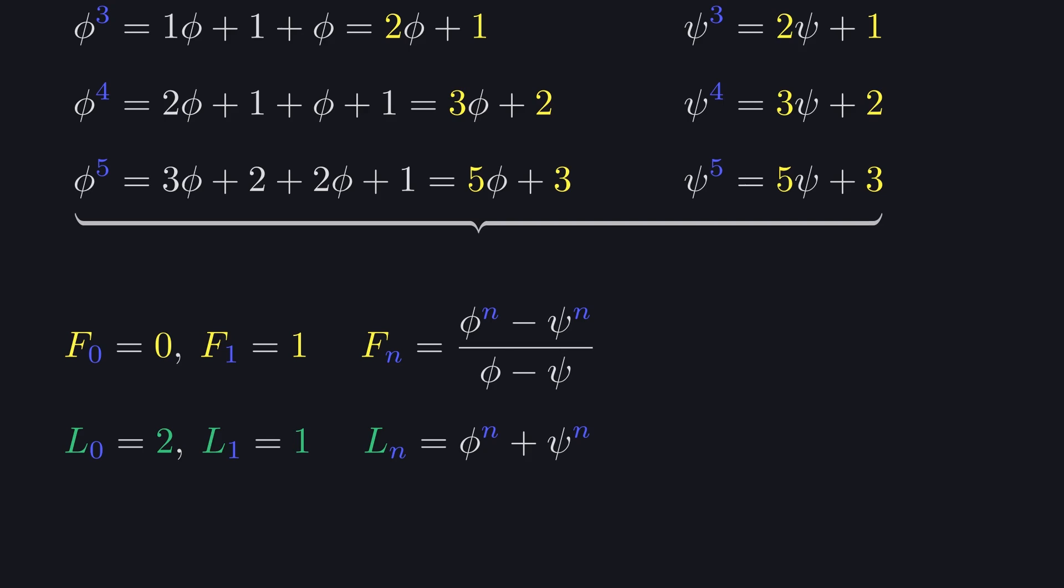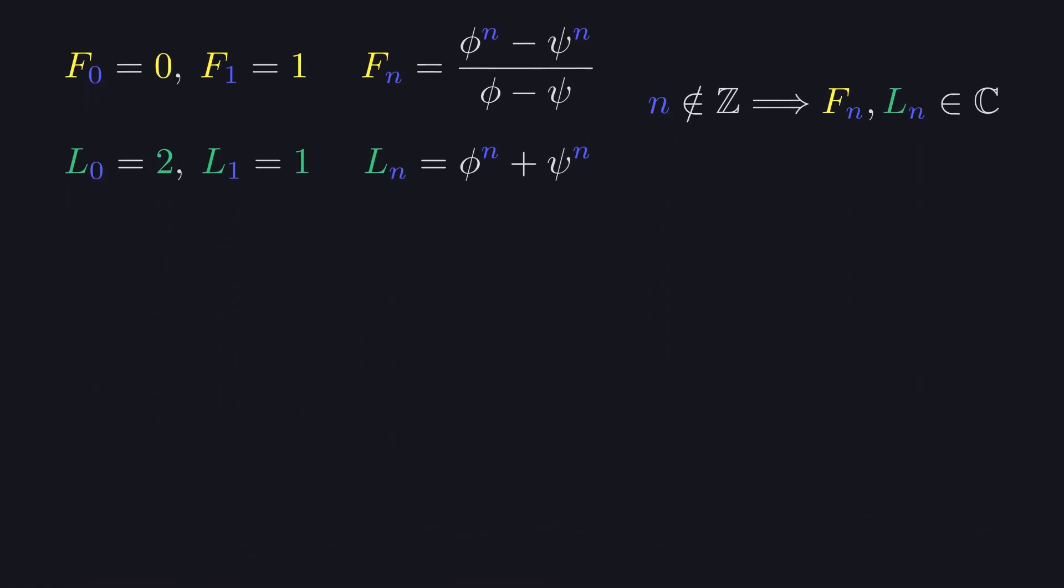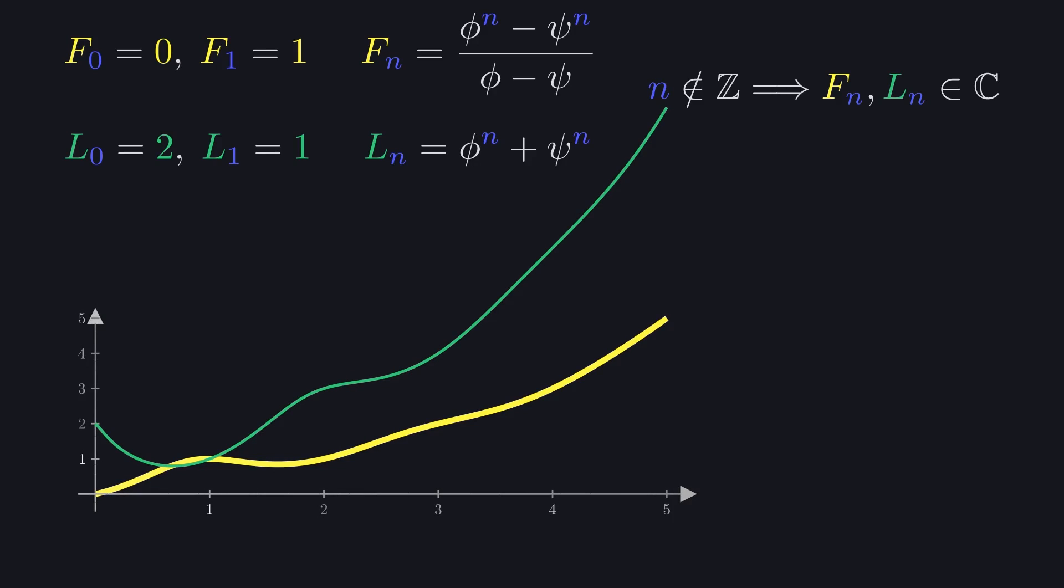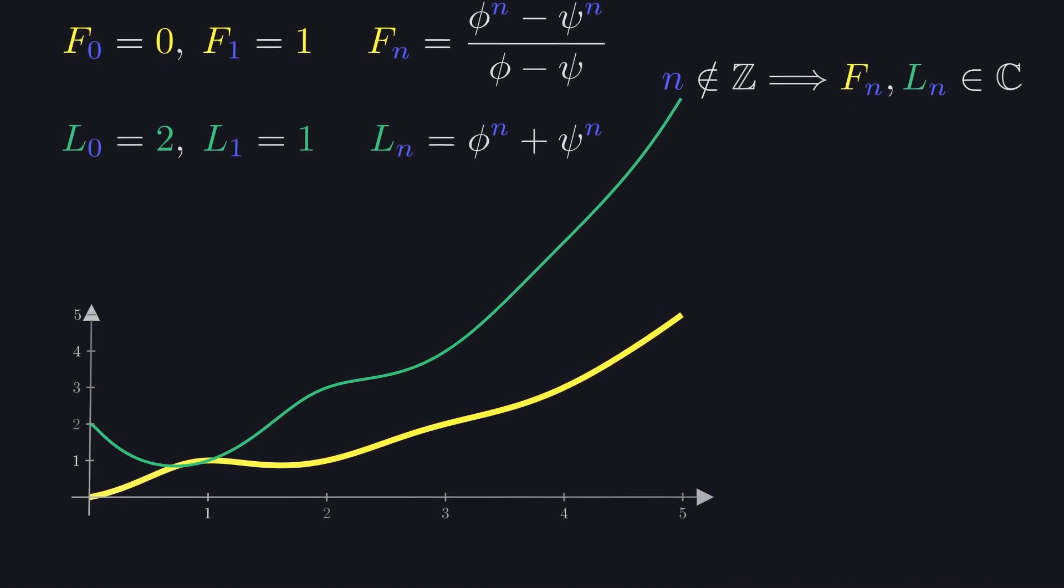Now, if we get a bit mischievous and plug a non-integer in for n, the closed-form formulas give us complex answers, because one of the numbers we're raising to that fractional power, psi, is negative. And this is our starting point today. The continuous complex curves we get are really just a tiny taste of a rich world hiding underneath the definitions we started with.